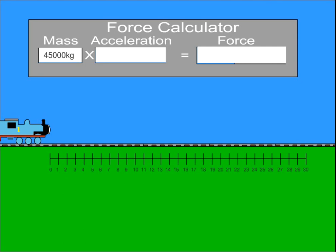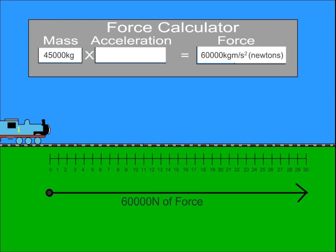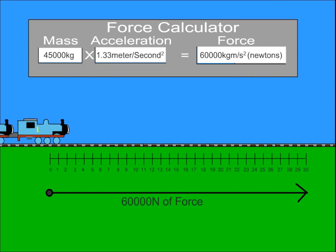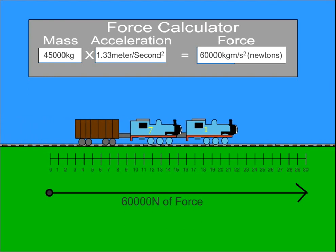We all know that Thomas is a lazy sod. Because of this, Edward, who he's tag teaming with, is able to pull twice as much, resulting in a total force of 60,000 newtons. Due to the increased force to mass ratio, our acceleration has now gone up to 1.33 meters per second squared.